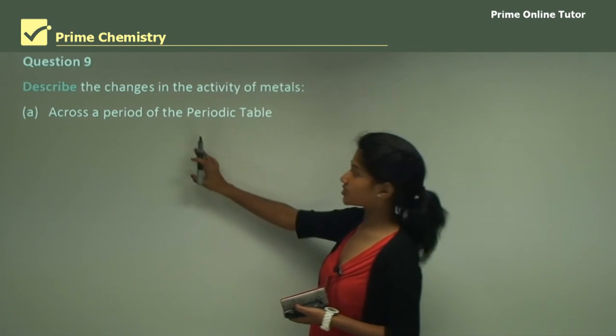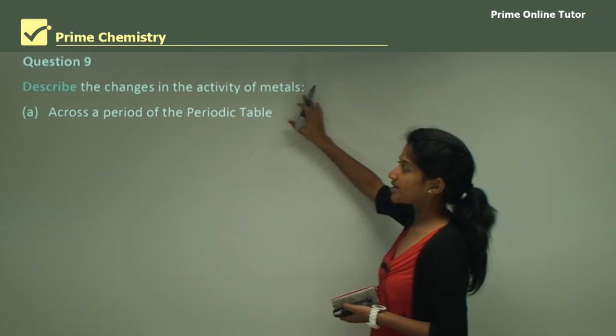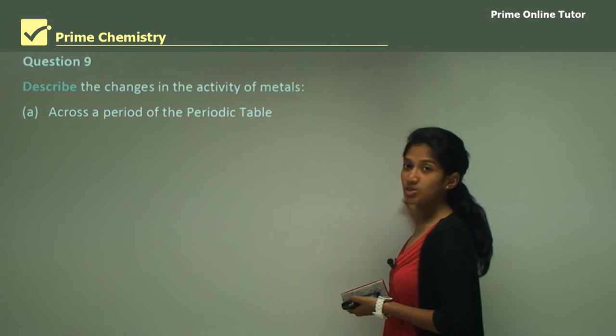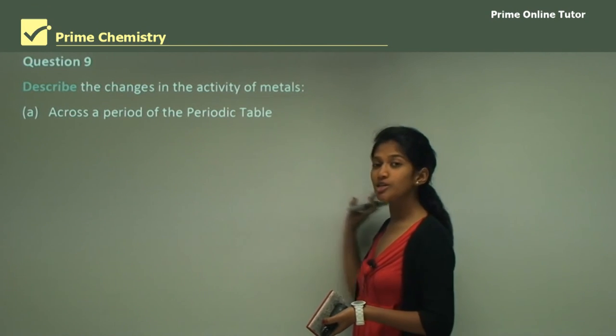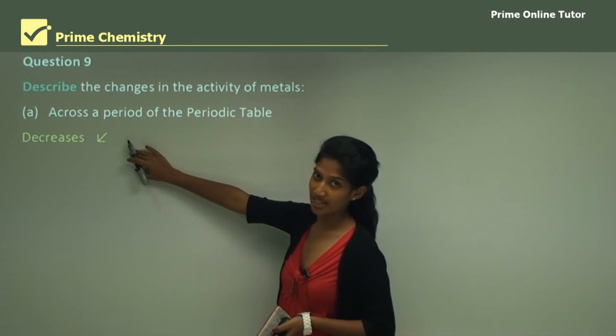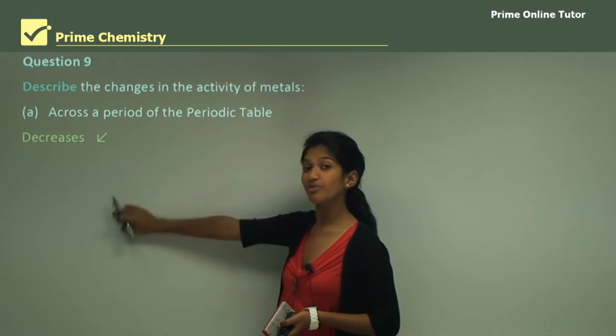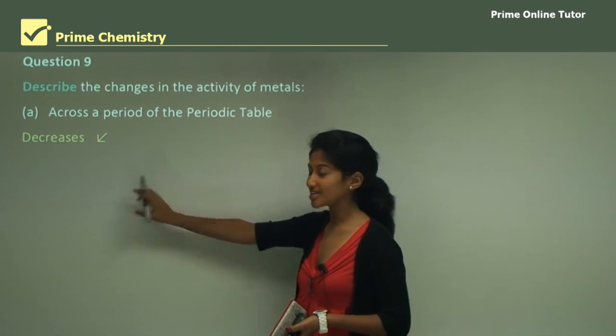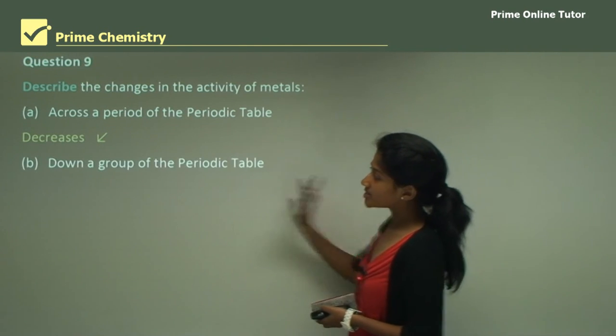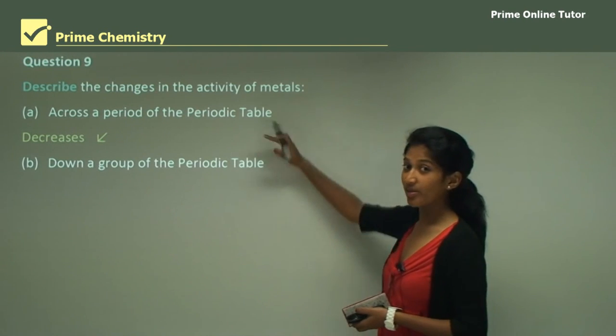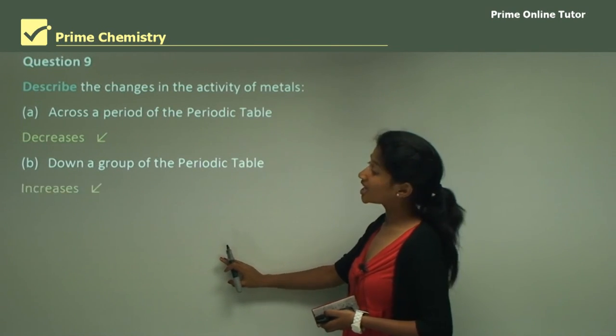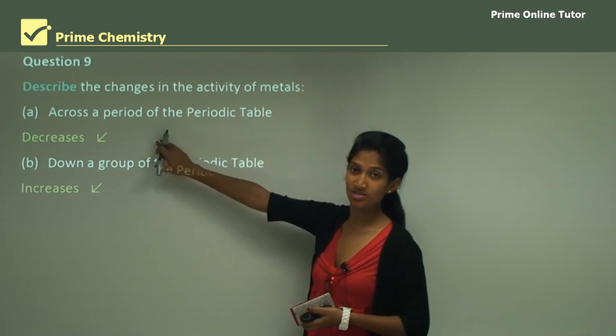Question 9. Describe the changes in the activity of metals across a period of the periodic table. Across a period means horizontally moving from the left to the right. When you're describing it you simply say what happens. It's decreasing, because elements from the first group which is towards your left are the most reactive, and elements towards your right are the least reactive. Down a group of the periodic table, in other words vertically going down, when it's going from the top to the bottom it's actually increasing.